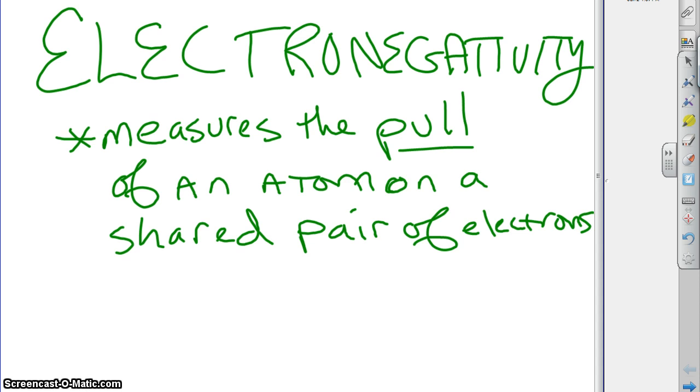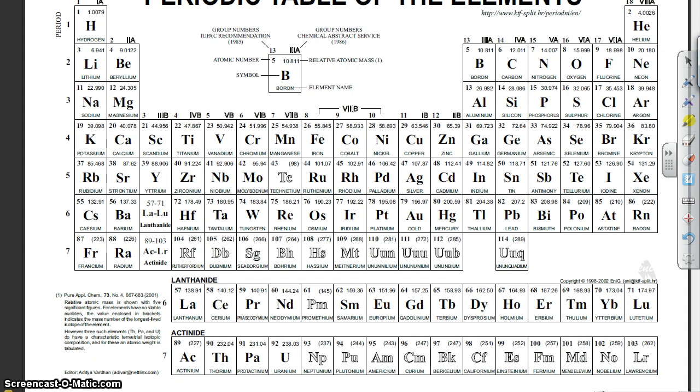And so in general, the trend is pretty easy to remember. In general, electronegativity gets bigger as you go to the right.